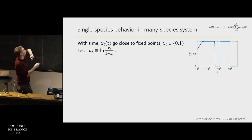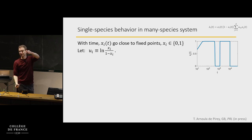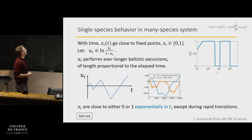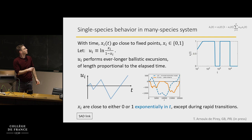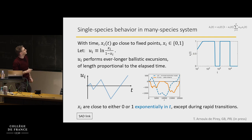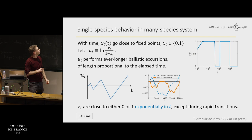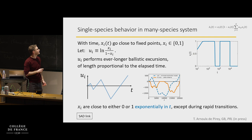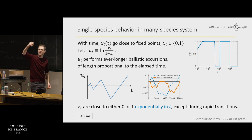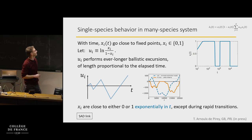If you stretch the segment from 0 and 1 to plus/minus infinity — basically taking log scale close to 0 and 1 — with this new variable u ranging from minus infinity to infinity, what you see is that u performs more or less a straight line ballistic motion for some time, then changes direction and performs a longer ballistic motion, and then an ever longer one, each time taking longer.